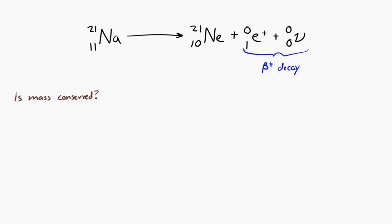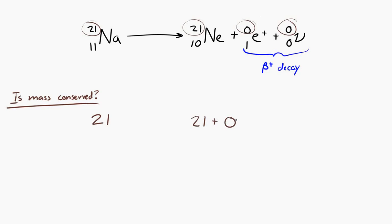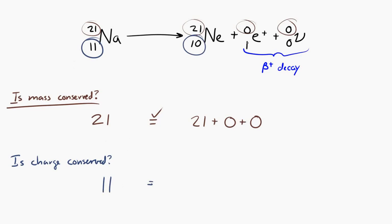Let's make sure the nucleon number is the same on both sides. On the left we have 21; on the right we have 21 plus 0 plus 0 — that balances. Now the charge number: on the left we have 11 for sodium. On the right, we have 10 for neon, 1 for the positron, and 0 for the neutrino — so 10 plus 1 plus 0 equals 11. The charge number also balances.